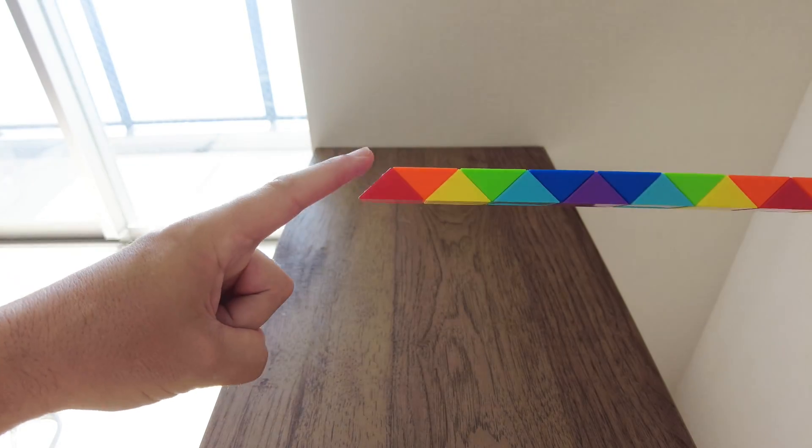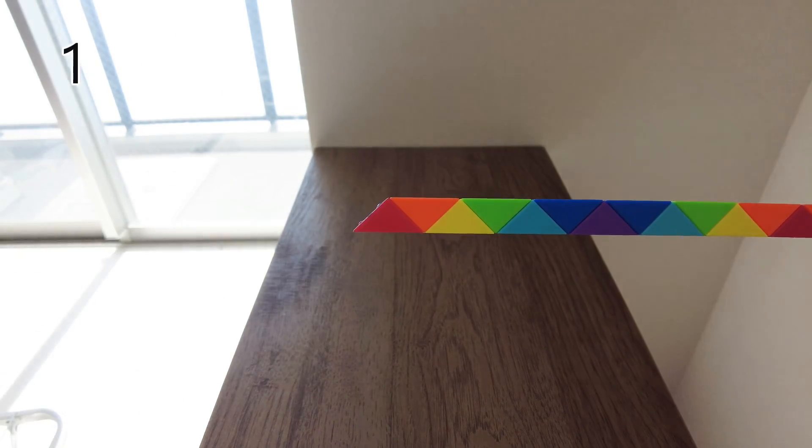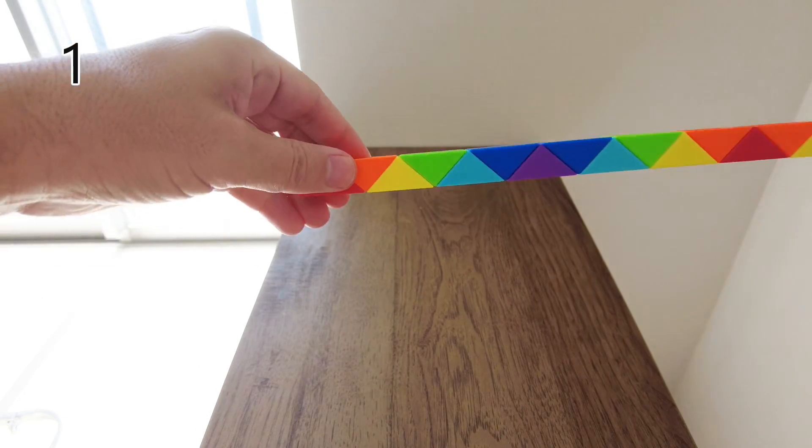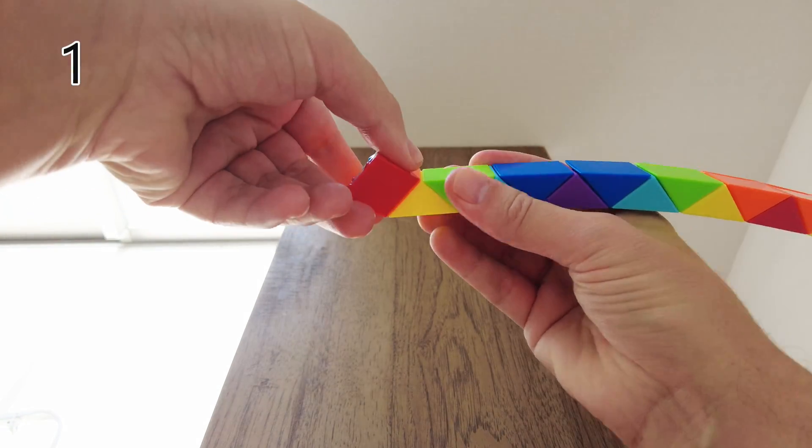So you start with the snake at this angle. And here you do one click towards you, like this.